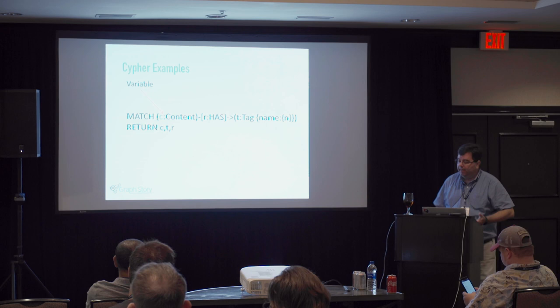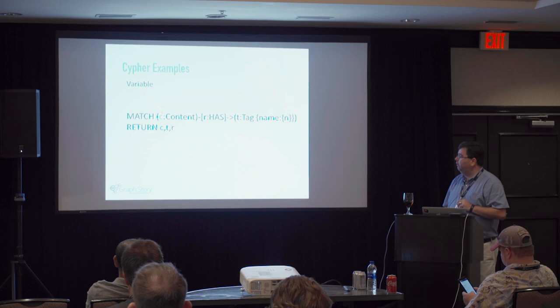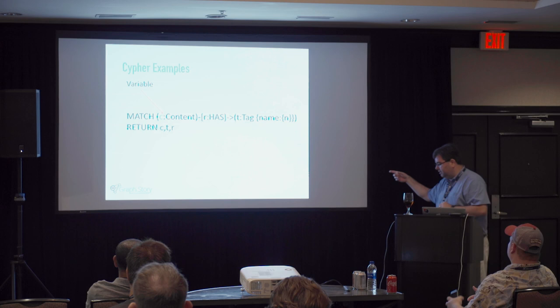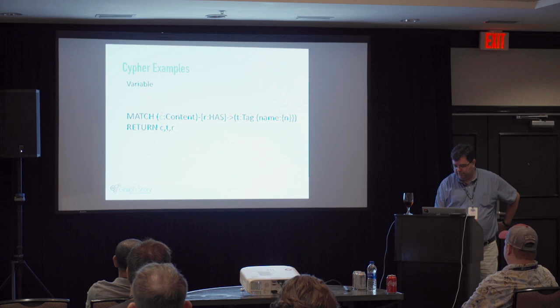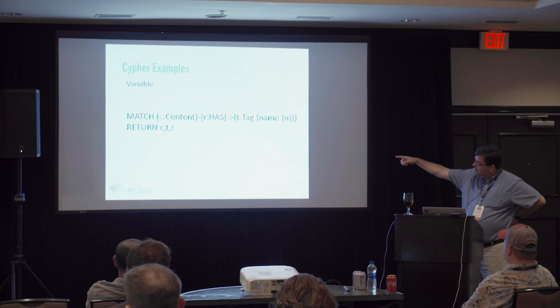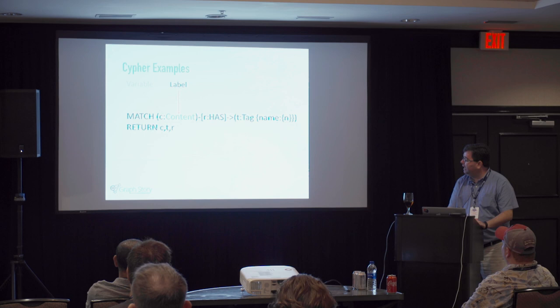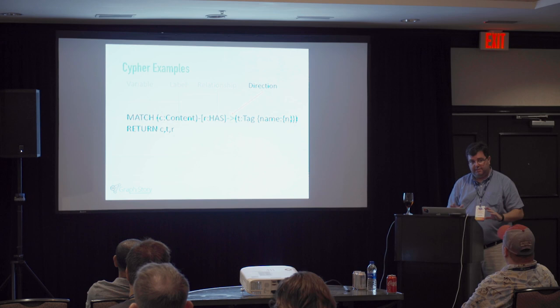Here, we're trying to match content based on a tag — this content has this tag. What I like about Cypher, besides looking like ASCII art, is that it reads like a sentence: 'content has tag.' It's a little easier to read than SQL. You have a variable that contains the data you can return. You can return the relationship, and there's the label. The relationship has a direction — sometimes that's important in a query, sometimes not.